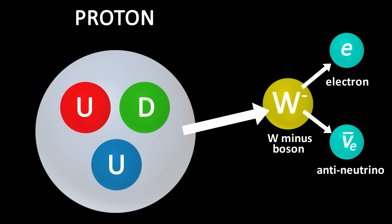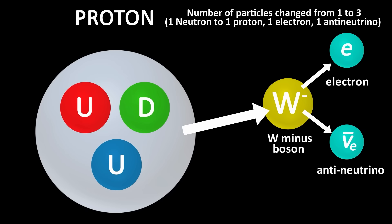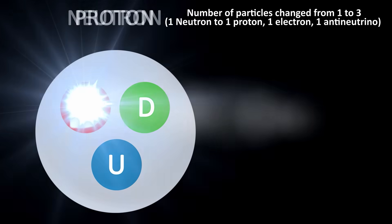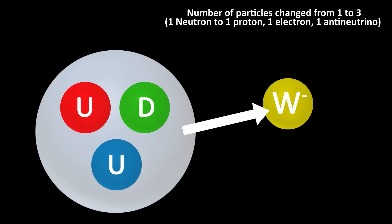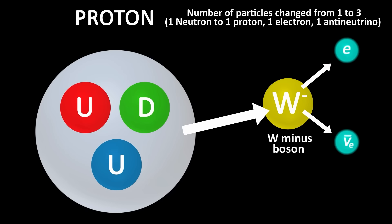In this case, quantum mechanics breaks down, because it doesn't work if we change the number of particles. In the case of the beta decay I just described, the down quark of a neutron decays into an up quark, changing the neutron to a proton, and at the same time emits an electron and an anti-neutrino with a mediating W boson. This change to other particles can't be described by quantum mechanics.